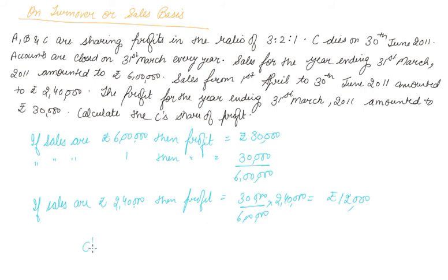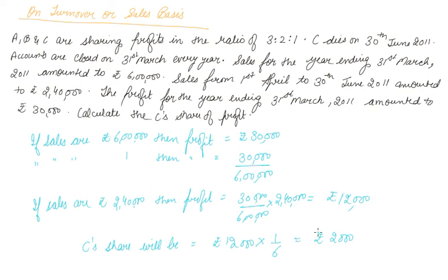Now C's share: C's profit-sharing ratio is 1 out of 6, so C's share equals one-sixth of 12,000, which is rupees 2,000. This is how the calculation of profit is done when a partner dies during the year before the financial year ending. These are the two methods. I hope you like our video — please download our Scholars Learning app and enjoy the learning experience with us.